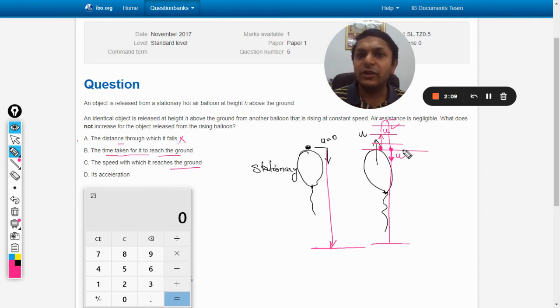One velocity will be in the upward direction, another will be in the downward direction, but the magnitude will be the same. So this will definitely reach here with a higher velocity, there is no doubt. The speed - this is also different.